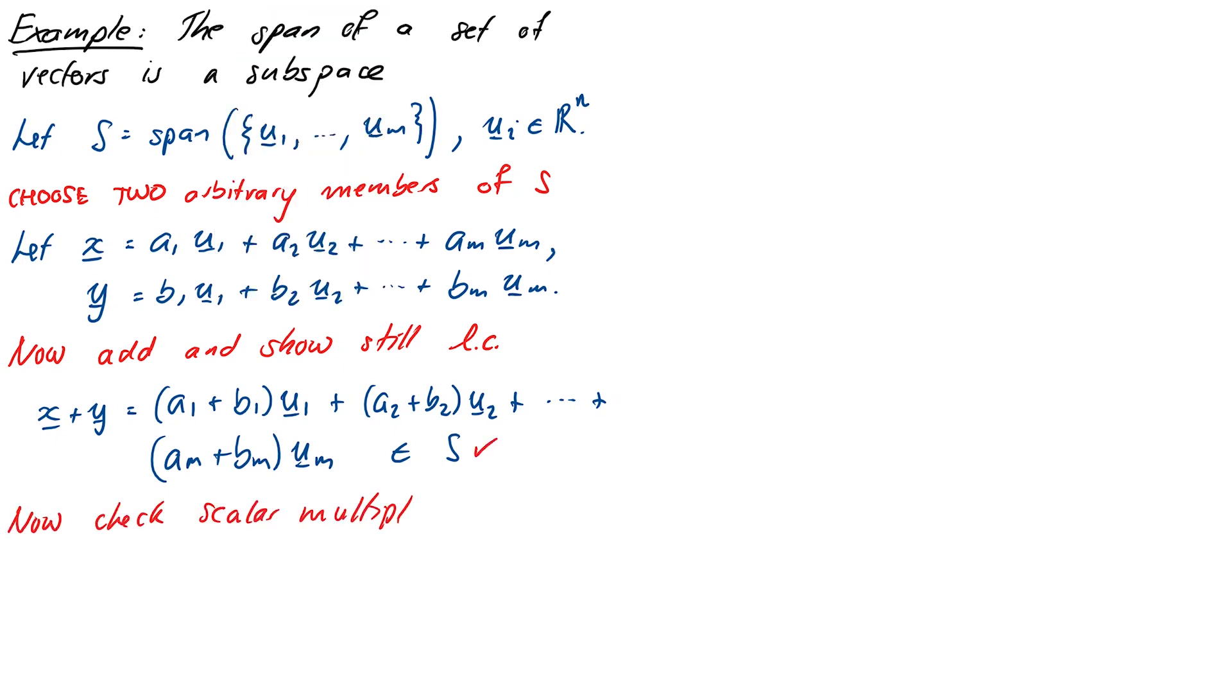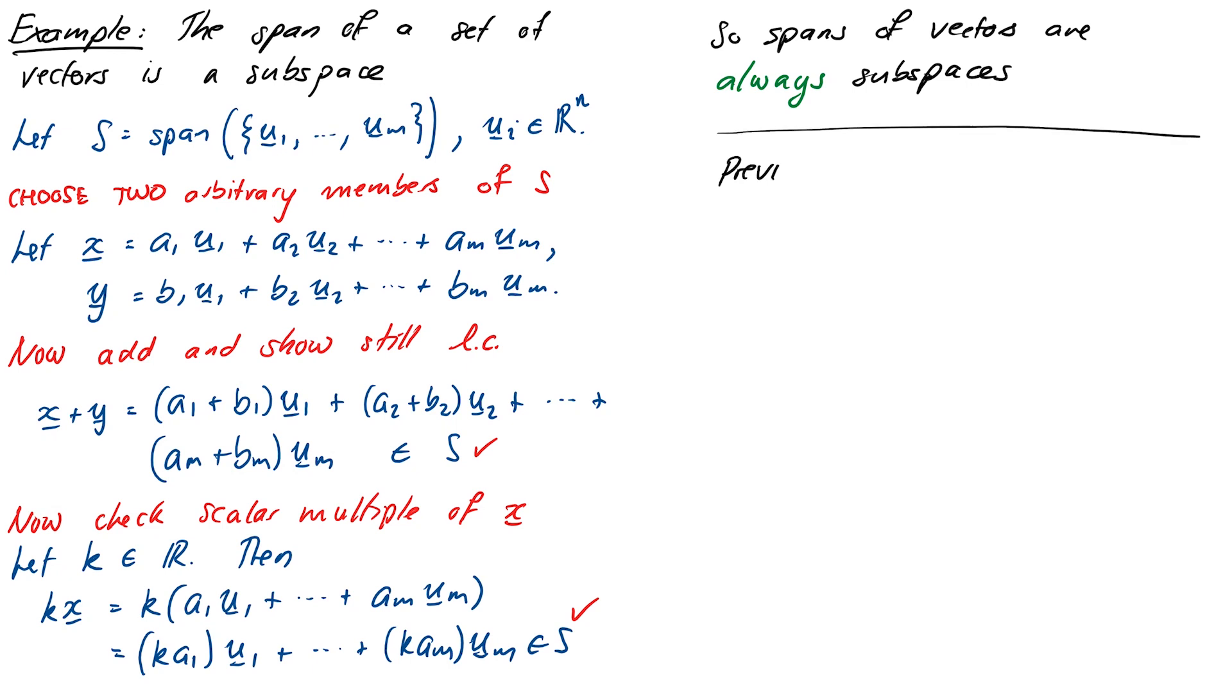We then need to check scalar multiplication. So let's choose a scalar k to be in R. Then k times x is equal to k times (A1U1 plus A2U2 through to AMUM). And that's itself equal to kA1 times U1 plus kA2 times U2 all the way through to kAM times UM. And this is also in the right format as a linear combination of the U vectors. So we've satisfied the second property. And this means that the span of our vectors is definitely a subspace of RN.